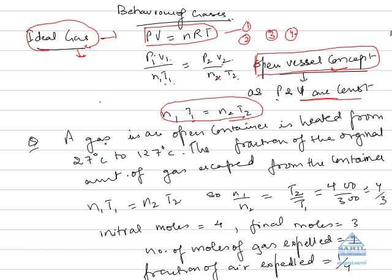Now for example, a gas is in an open container. It is heated from 27 degrees Celsius to 127 degrees Celsius. Now the fraction of original amount of gas, if we want to calculate, we can apply directly the formula n1T1 is equal to n2T2. Or we can write n1 over n2 is equal to T2 over T1.